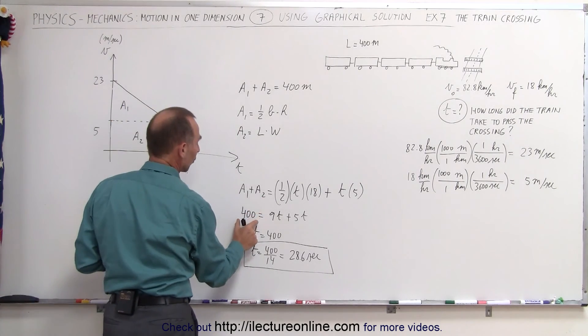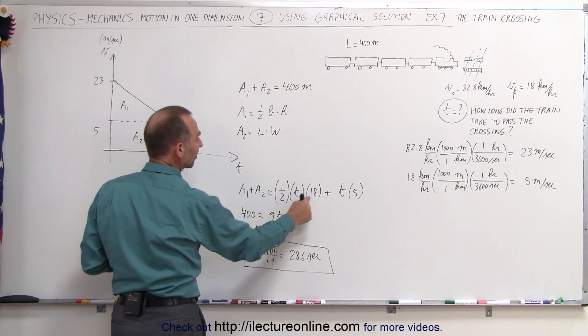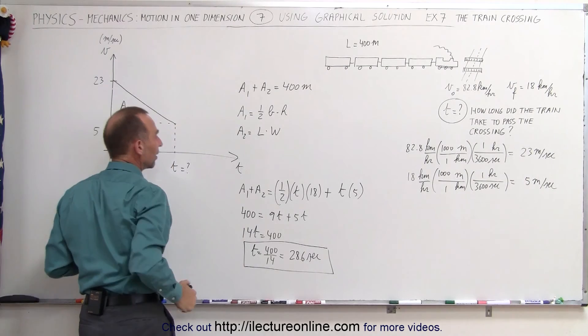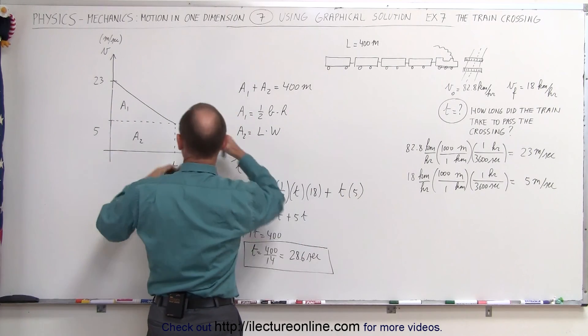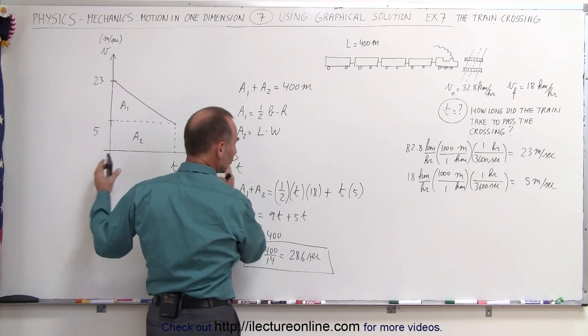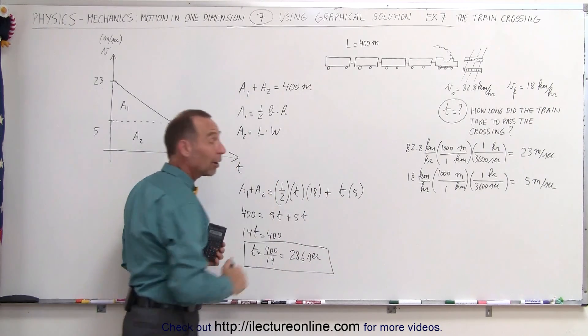So here we add the two areas, which is 400 meters, one half of the base times the height, the height would be the change in the velocity from 23 down to 5, and here that would be the height of the rectangle times the time, which is the length of the rectangle, and that's how we solve for time.